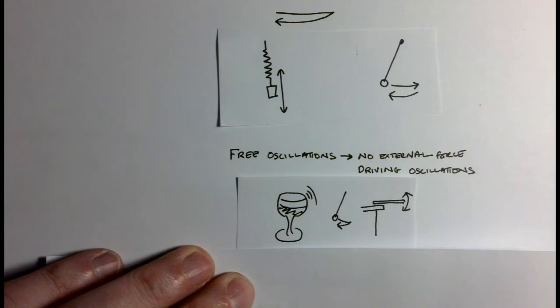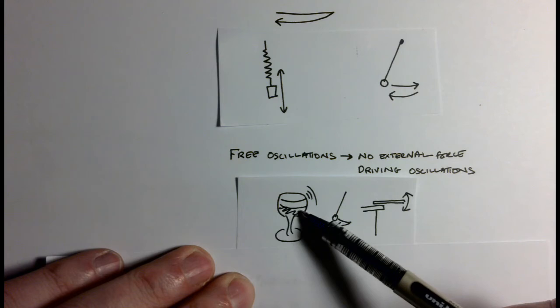And you'll probably notice that it'll always make that note, assuming it's got the same amount of wine in it. If we reduce this wine and flicked it again, it would make a slightly different note.